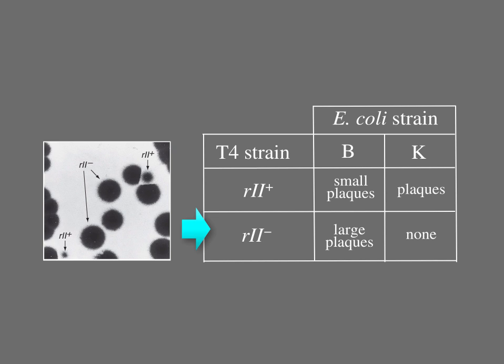The R2 mutant phage had both abnormal plaque size and abnormal host range. The R2 mutants make larger than normal plaques on E. coli B, and they cannot propagate on E. coli K at all. The inability of R2 mutants to make plaques on E. coli K was most important to Benzer's experiments.